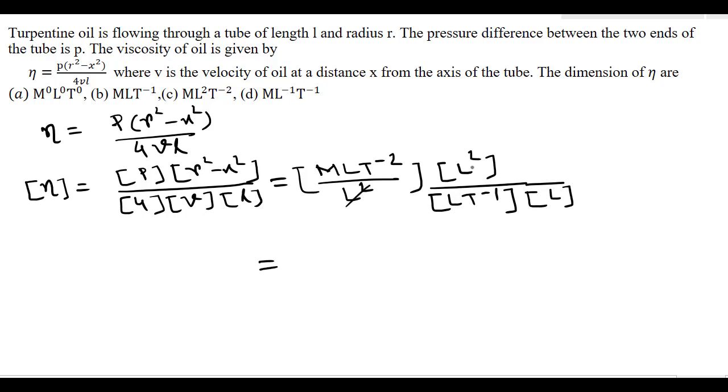Now here L² cancels, L cancels, so this is M and there is L, so this is L⁻¹, and T⁻² divided by T⁻¹, this is T⁻¹.